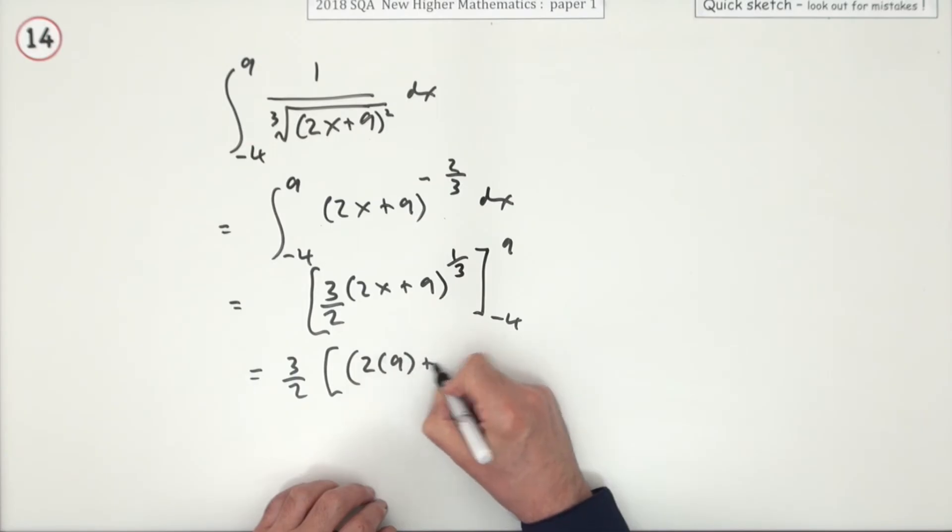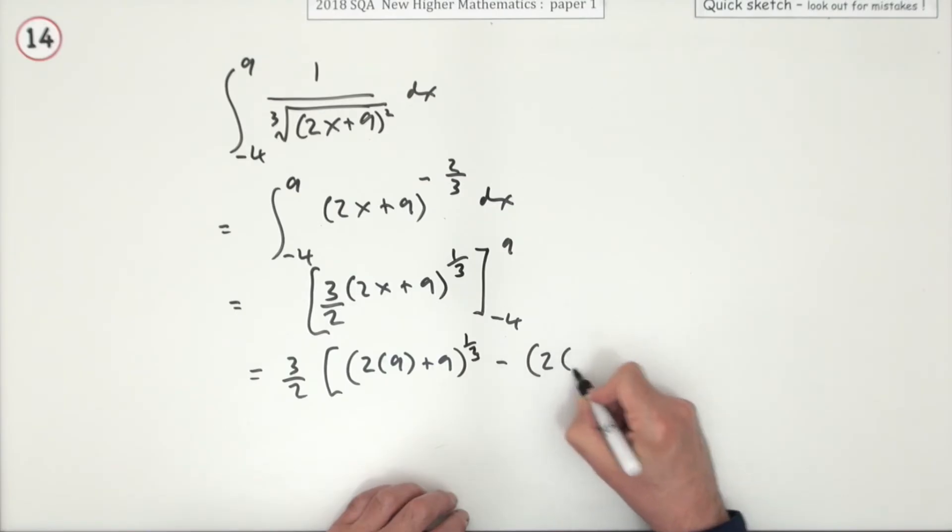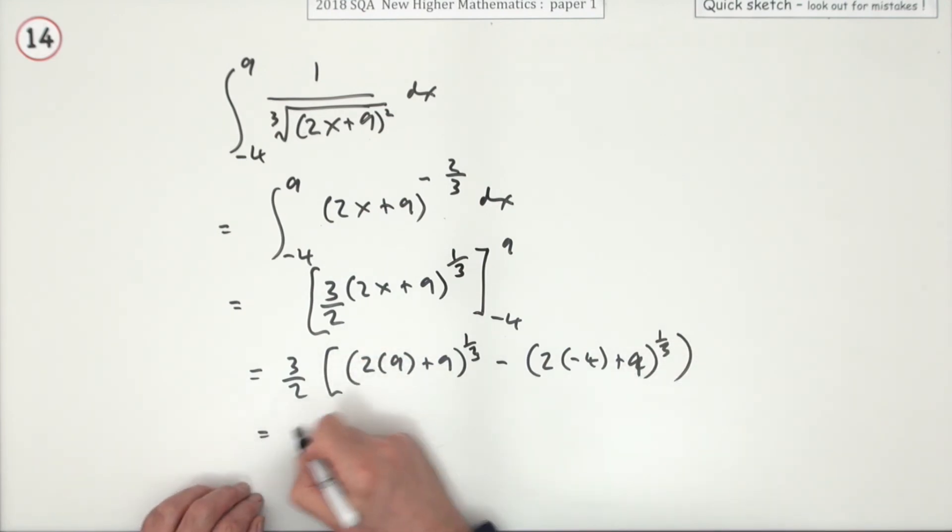So it's 2 times 9 plus 9, all to the power of a third. Oops. Minus 2 times negative 4 plus 9, all to the power of a third. Don't need to be square there. So it's 3 upon 2 times what?